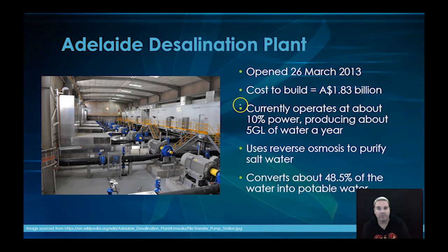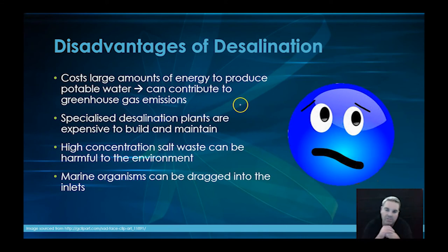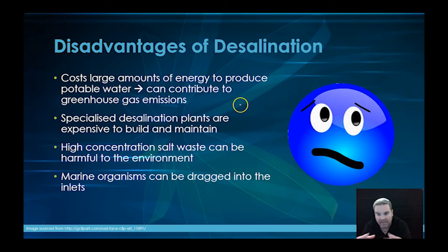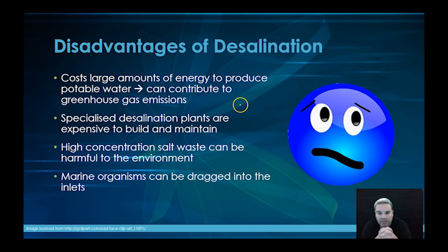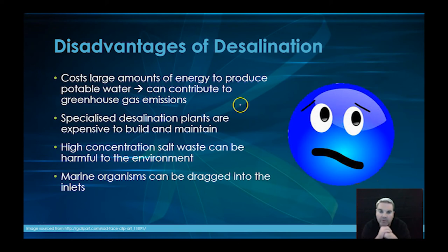There are some disadvantages: it costs a large amount of energy to build the plant and then to produce the potable water. You need containers which can hold the high pressure, and to create that pressure you normally need electricity, which can obviously contribute to greenhouse gas emissions. Another problem is the salty brine water left over — you have to get rid of that somehow. A lot of people ask can't you just put it back into the ocean, but it's much saltier than what's normally in the ocean and can cause a lot of issues for marine organisms living there.